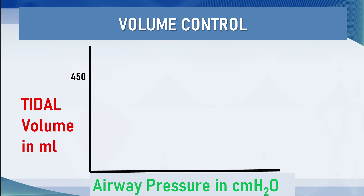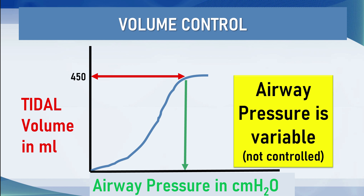So in volume control ventilation, a tidal volume goal is set — meaning the ventilator generates a flow of gas to hit the tidal volume target. In this case 450 mils is achieved, inward flow stops, and we can measure the airway pressure at end inspiration. That pressure is variable in volume control. The pressure is measured in centimetres of water; in this case the airway pressure is 20 centimetres of water for a set tidal volume of 450 mils.